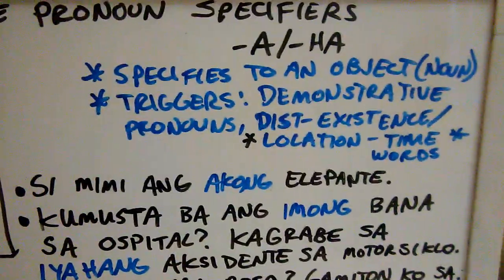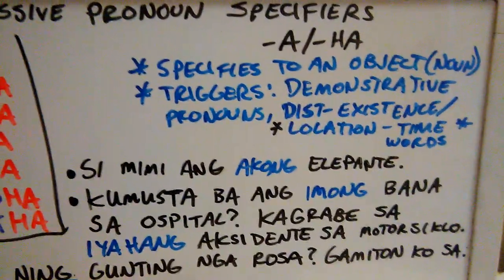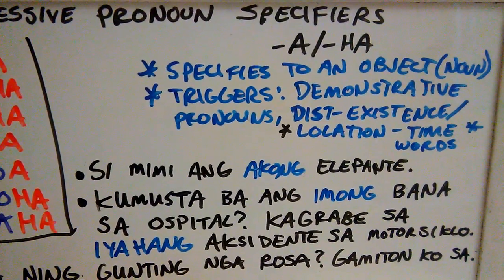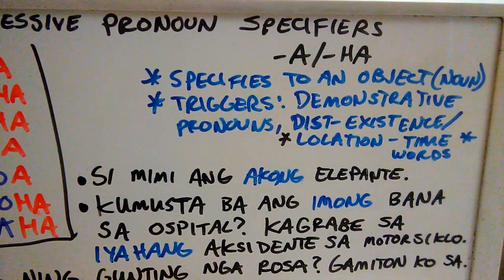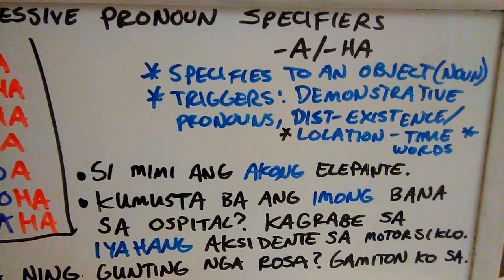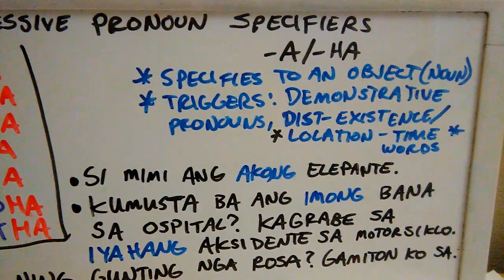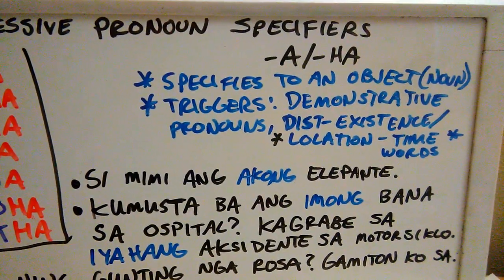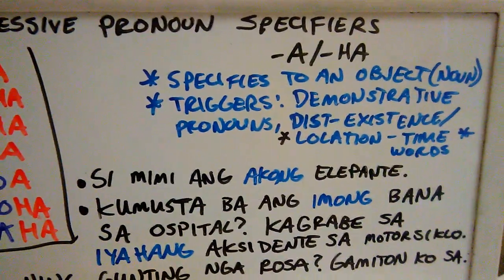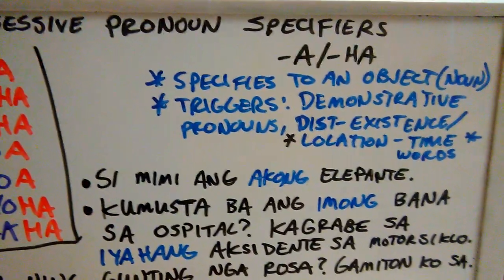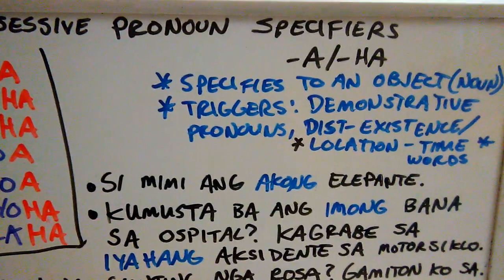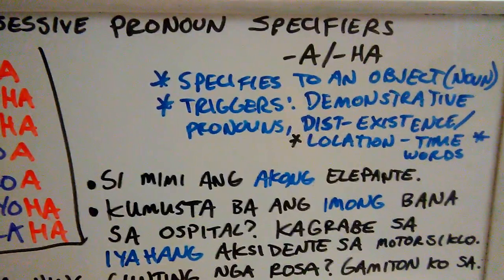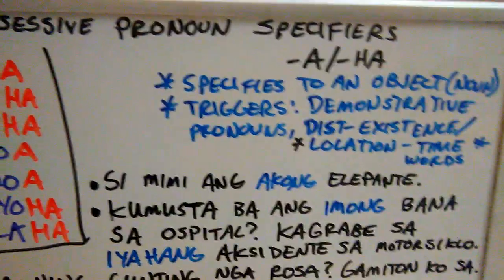Starting with the specifiers that get attached to these possessive pronouns — when a possessive pronoun gets attached a specifier, that object being specified is now specific to that possessive pronoun. If a possessive pronoun gets attached a specifier, the noun that it relates to is now specific to that possessive pronoun. So, how do we know when to use them? There are triggers.